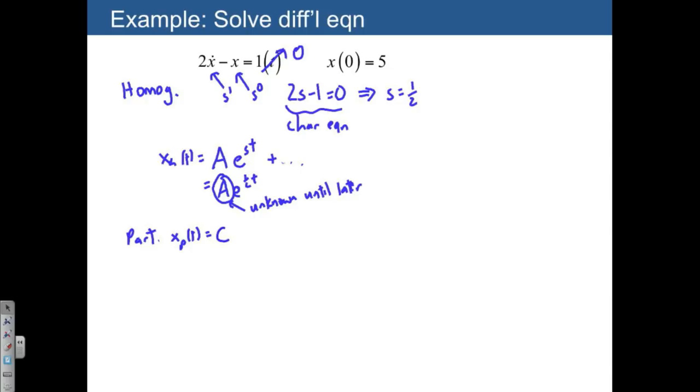And so that tells us that we're looking for a waveform, which is also a constant, just like 1 is. And so we're going to start off with xp is equal to our constant c, where this is also unknown. And the way we solve for it is we're going to plug this back into the differential equation.